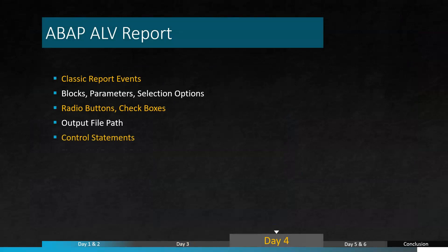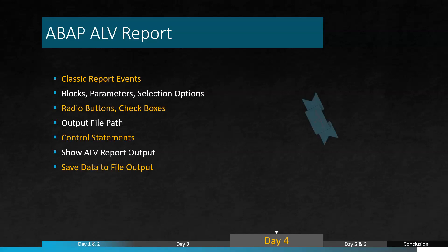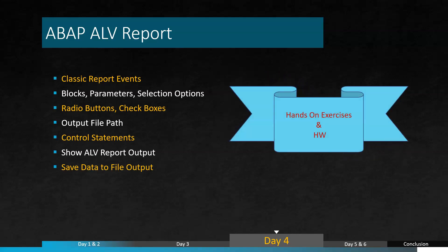ALV report is one important assignment which every developer has to accomplish in every project they are assigned to. We will dedicate a session to demonstrate the details of ALV reporting, starting from selection screen elements to the final report display. We will try to explain each point in detail, and you will also get an assignment which you have to submit at the end of this session.